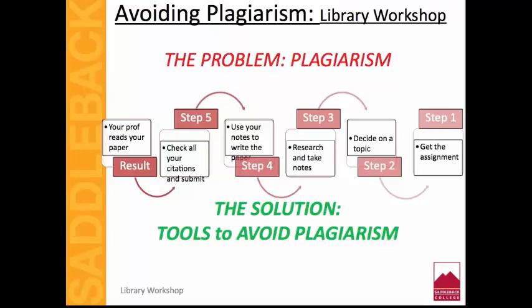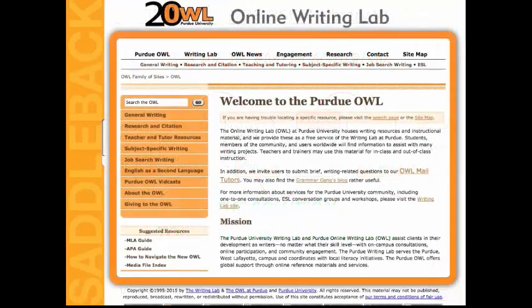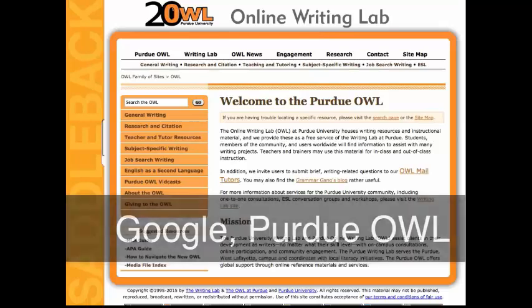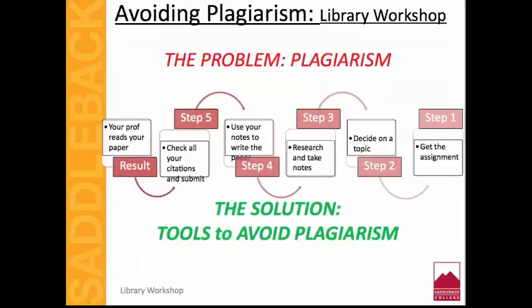There are free tools to help with this. On the internet, you can use the Purdue Online Writing Lab, called OWL, that shows how to put a citation in your paper or assignment, and how to format the citation in different citation styles. Citation generators like Citation Machine, RefWorks, and BibMe can help you format a citation.